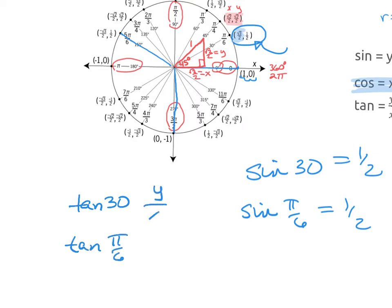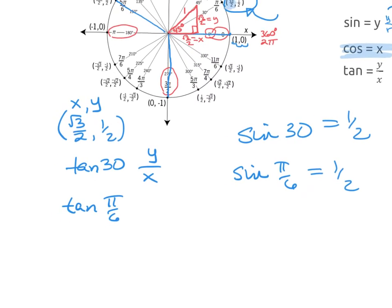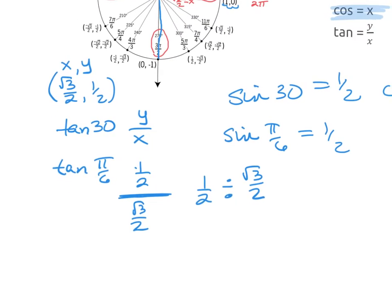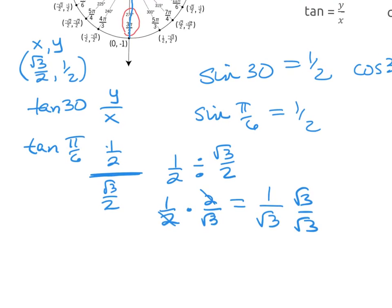Tangent of 30, or pi over 6. Remember, tangent is y divided by x. If you grab the ordered pair for 30 degrees, it's root 3 over 2, comma, 1 half. The first number is x, the second is y. So I'm going to do 1 half over square root 3 over 2. This fraction bar means division, so 1 half divided by root 3 over 2. When you divide fractions, you do a keep-flip-change. Simplify: 1 over square root 3. Rationalize. And the answer to the tangent of 30 is the square root of 3 over 3. So for tangent, you've got to work for it.